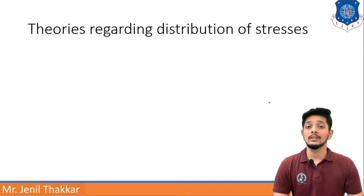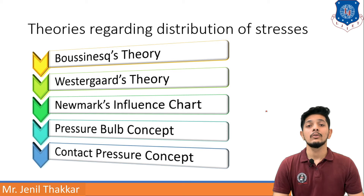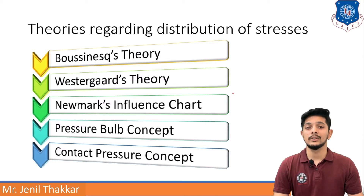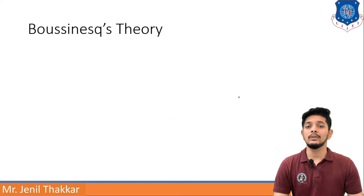The theories regarding stress distribution in this chapter are mainly five fundamental theories. First is Boussinesq's theory, second is Westergaard's theory, third is Newmark's influence chart, fourth is the pressure bulb concept, and fifth is the contact pressure concept. Let us understand them one by one, starting with the first and very pioneer theory: Boussinesq's theory.